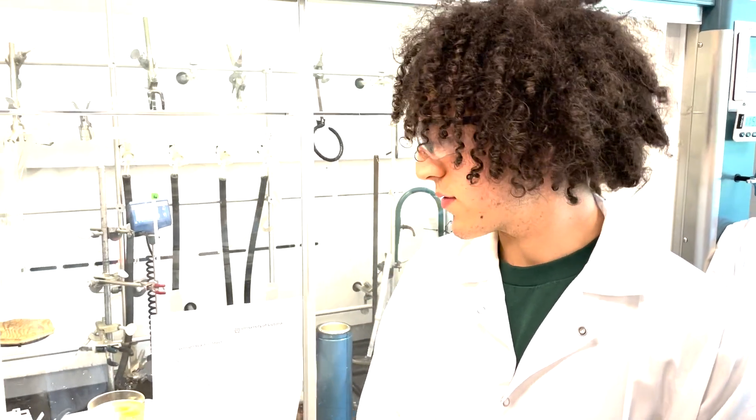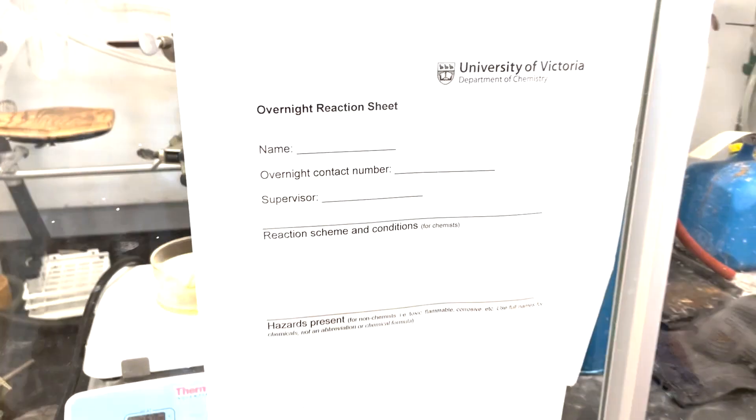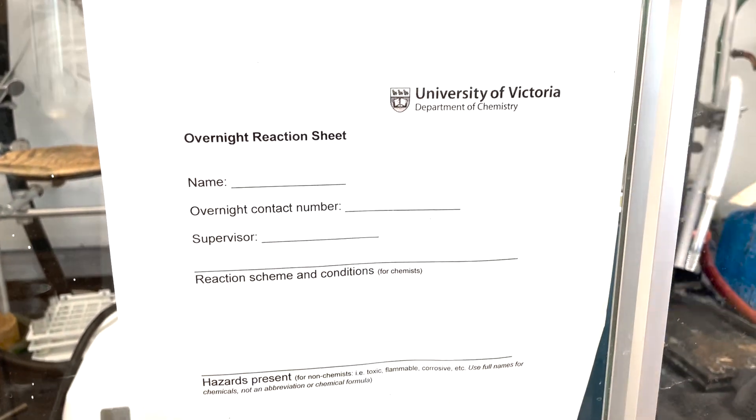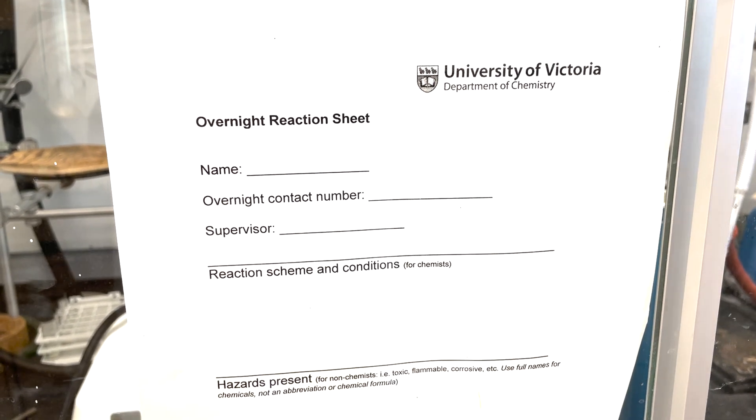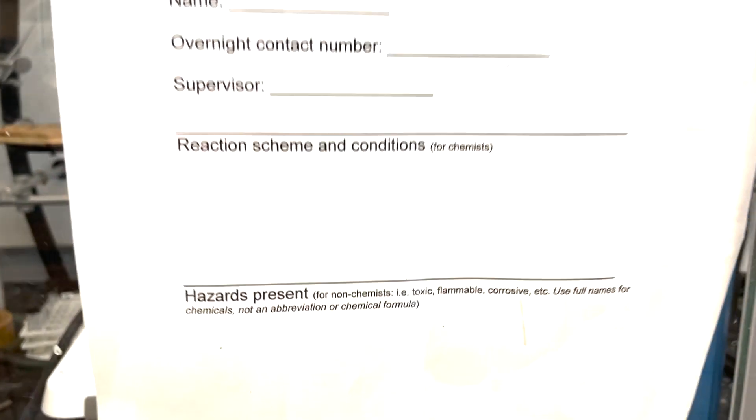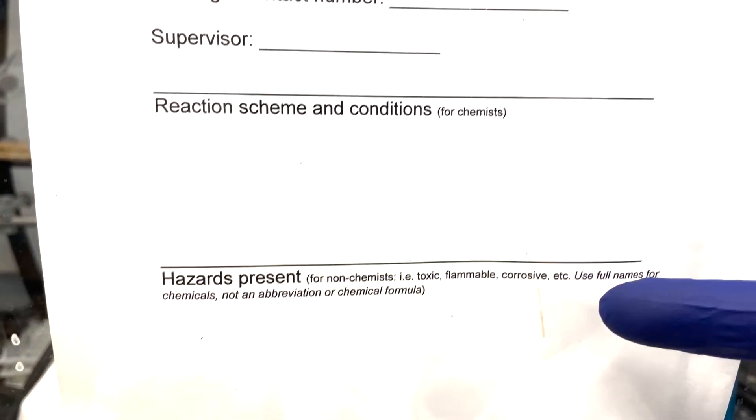If a fume hood is used for overnight reactions, it is needed that an overnight reaction sheet is filled out with your name, your contact number, your supervisor, and all hazards listed with WHMIS terminology.